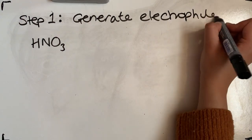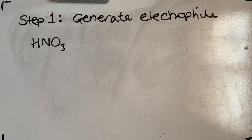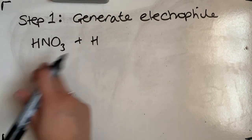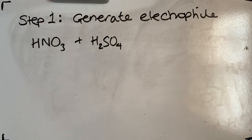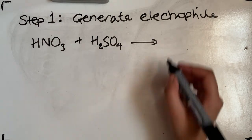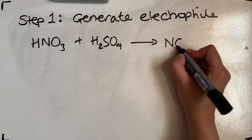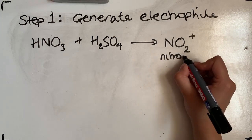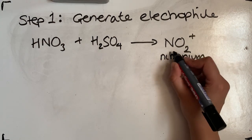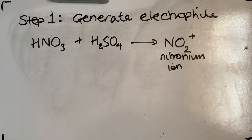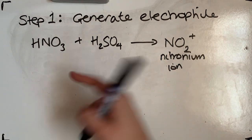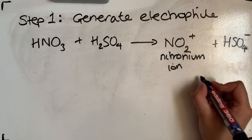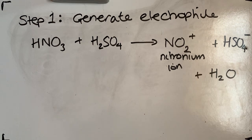An electrophile must be positively charged because it wants to accept a pair of electrons. When we react concentrated nitric acid with concentrated sulfuric acid, we form the electrophile called the nitronium ion, NO₂⁺, which has a positive charge and acts as a very good electrophile. In this process, we also form HSO₄⁻ and a water molecule.